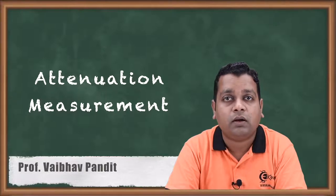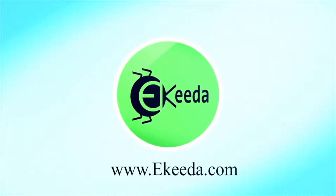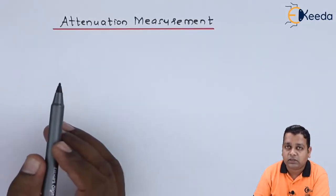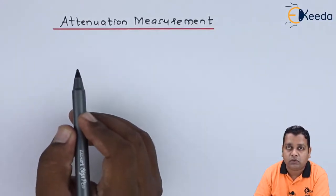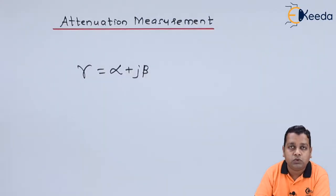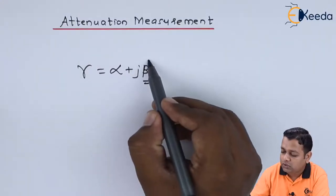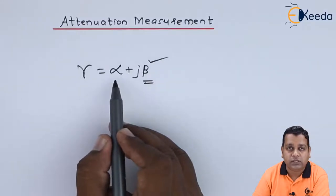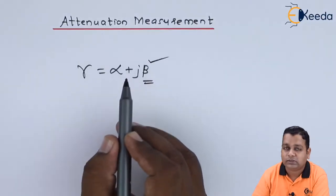Now in this chapter, let us look at the measurement of attenuation. Whenever a microwave signal propagates from the source to the load, it is governed by the propagation constant gamma, expressed as alpha plus j times beta. Ideally, beta (the phase shift constant) should be non-zero, and alpha (the attenuation) should be zero — but practically, attenuation does occur, making its measurement very important.